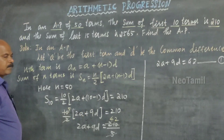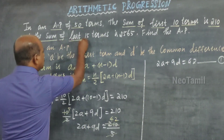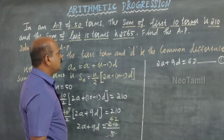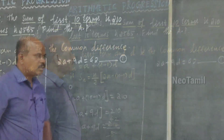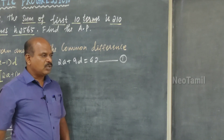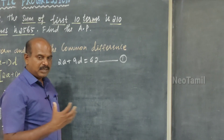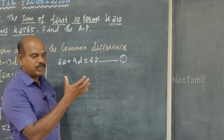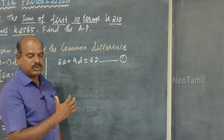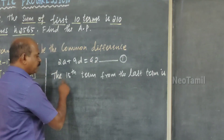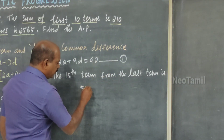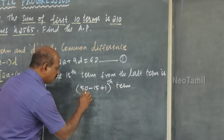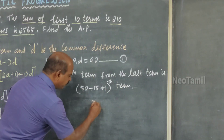Now I am going to use the second condition: the sum of the last 15 terms is 2565. The standard formula gives sum of the first n terms, but here we need the sum of the last 15 terms. I need to identify which term is in the 15th position from the last. Using the formula: the 15th term from the last = (50 − 15 + 1) = 36th term.